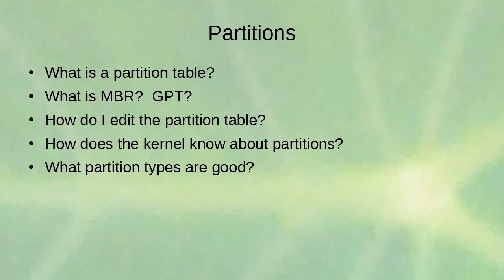GPT solved a lot of those problems. To edit the partition table, you use the fdisk command. Once you edit and write the partition table, it writes out to either MBR or GPT, but the kernel doesn't know about it unless it rereads that information. You can use utilities like partprobe to tell the kernel to reread the partition tables and reload information, and then it can start using that as it mounts partitions.